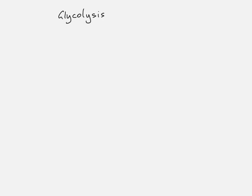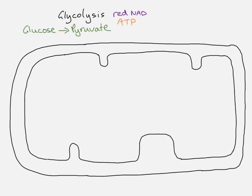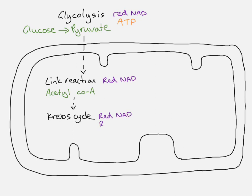The first stage of respiration is called glycolysis. Glycolysis takes a glucose molecule and turns it into something called pyruvate. When this happens, reduced NAD and a small amount of ATP are produced. The pyruvate is produced in the cytoplasm. Glycolysis happens in the cytoplasm and that pyruvate then moves into the mitochondrial matrix, which is where the link reaction happens. The link reaction ends up with something called acetyl coenzyme A, which is then the first part of the Krebs cycle. The link reaction also produces some reduced NAD. The Krebs cycle also produces reduced NAD and reduced FAD and some ATP, but only a very small amount.